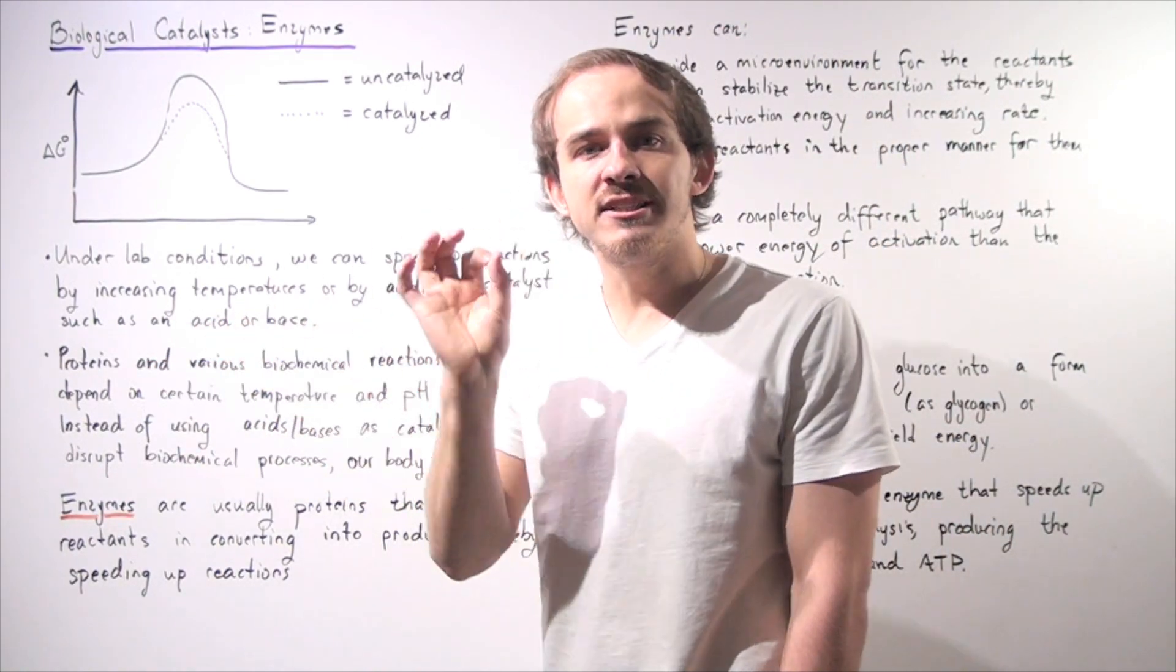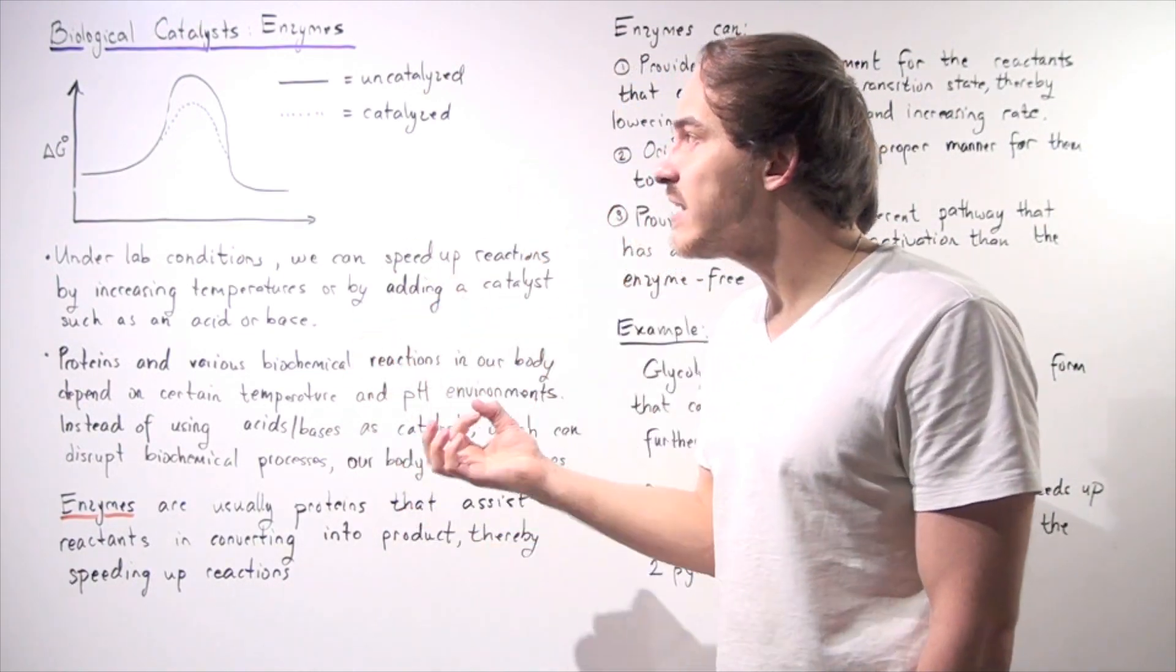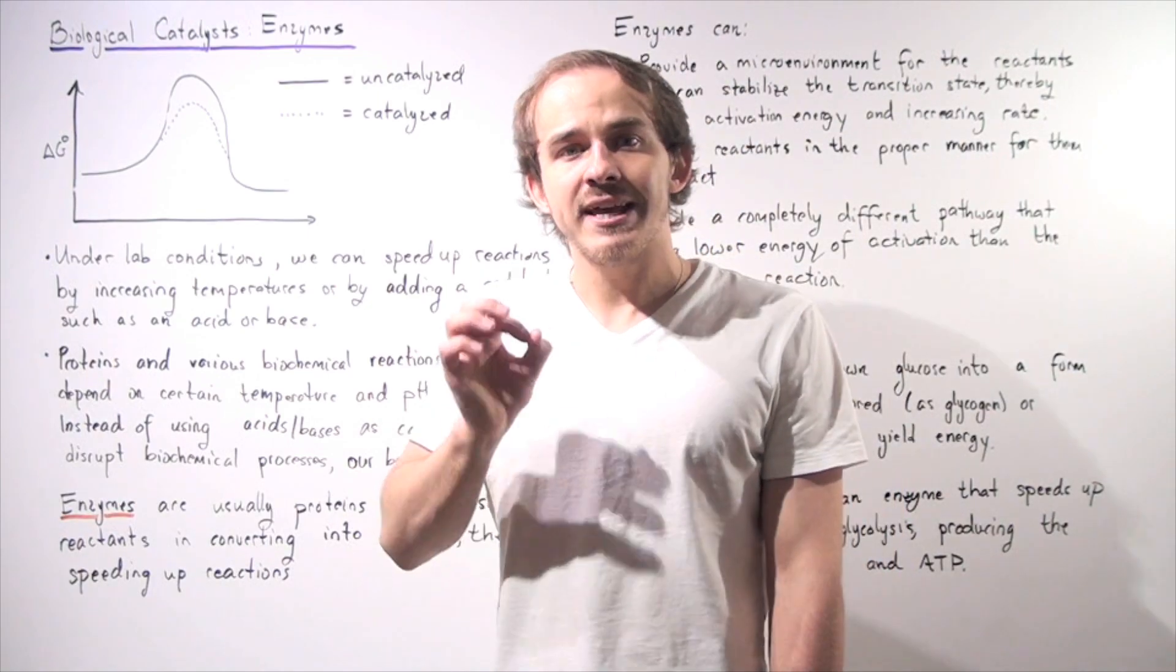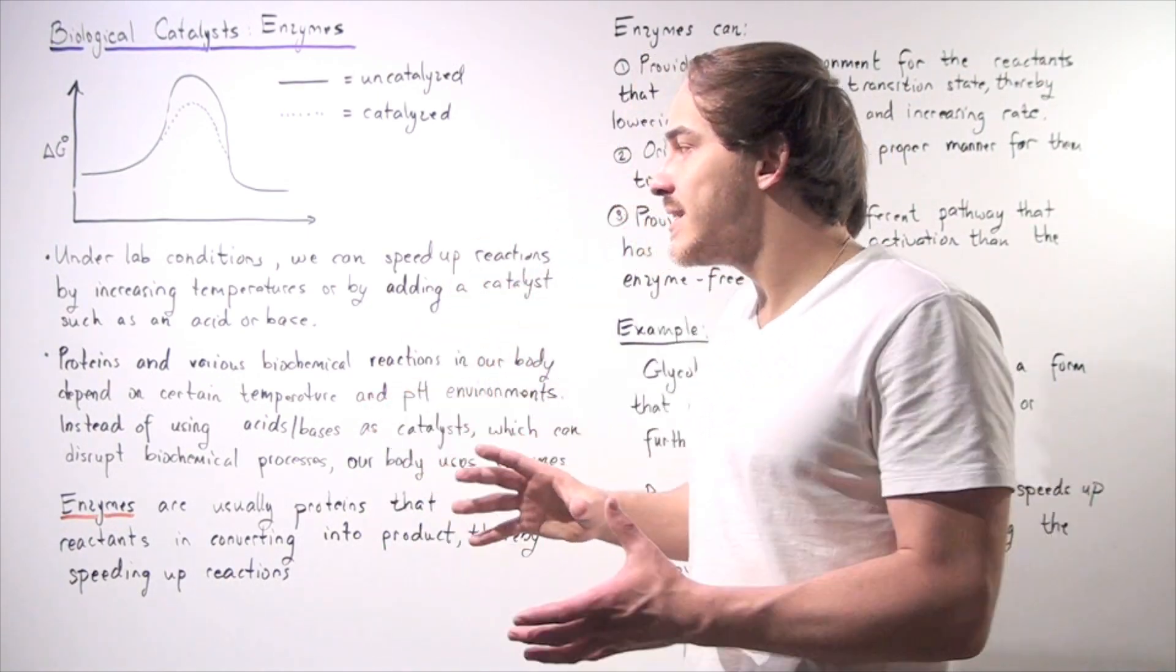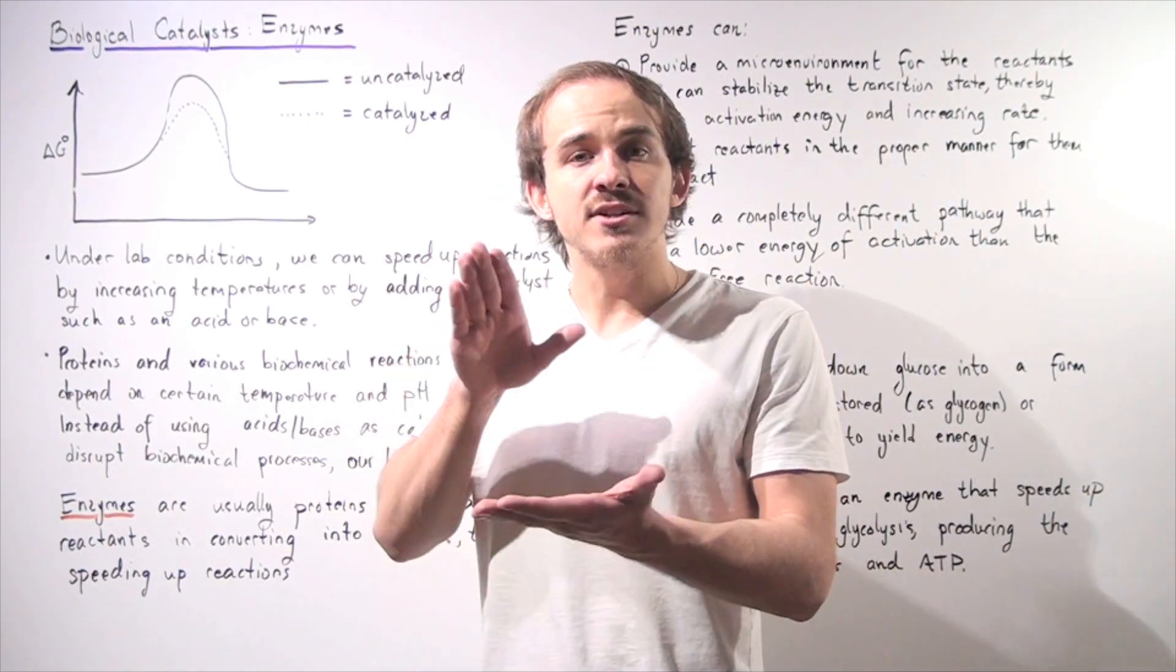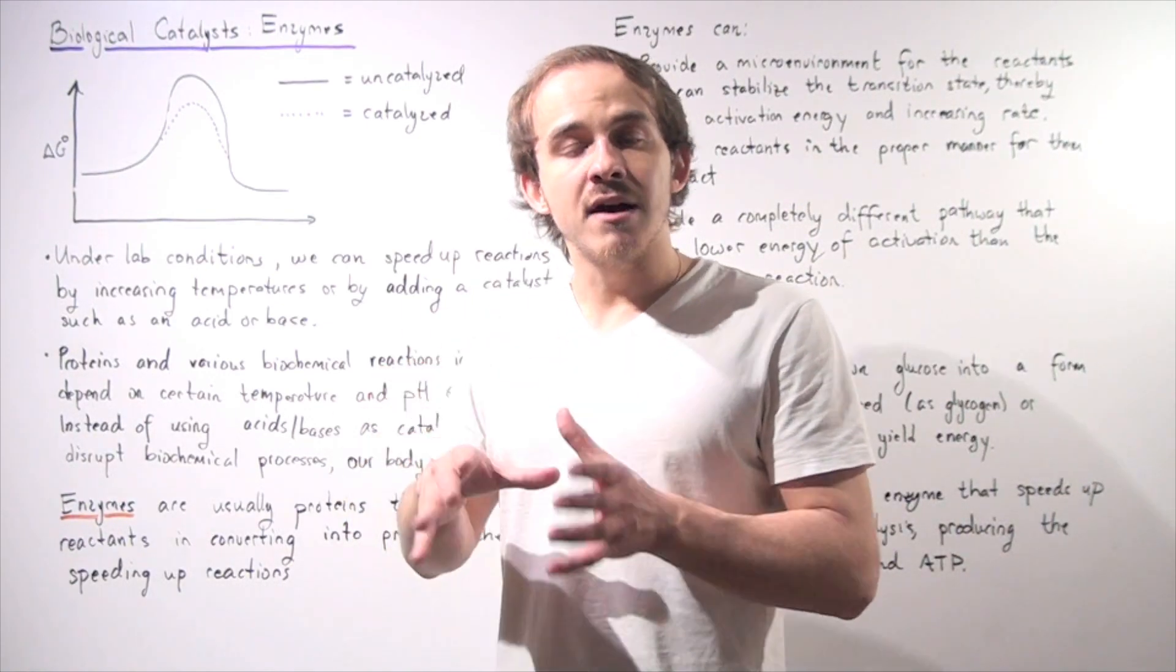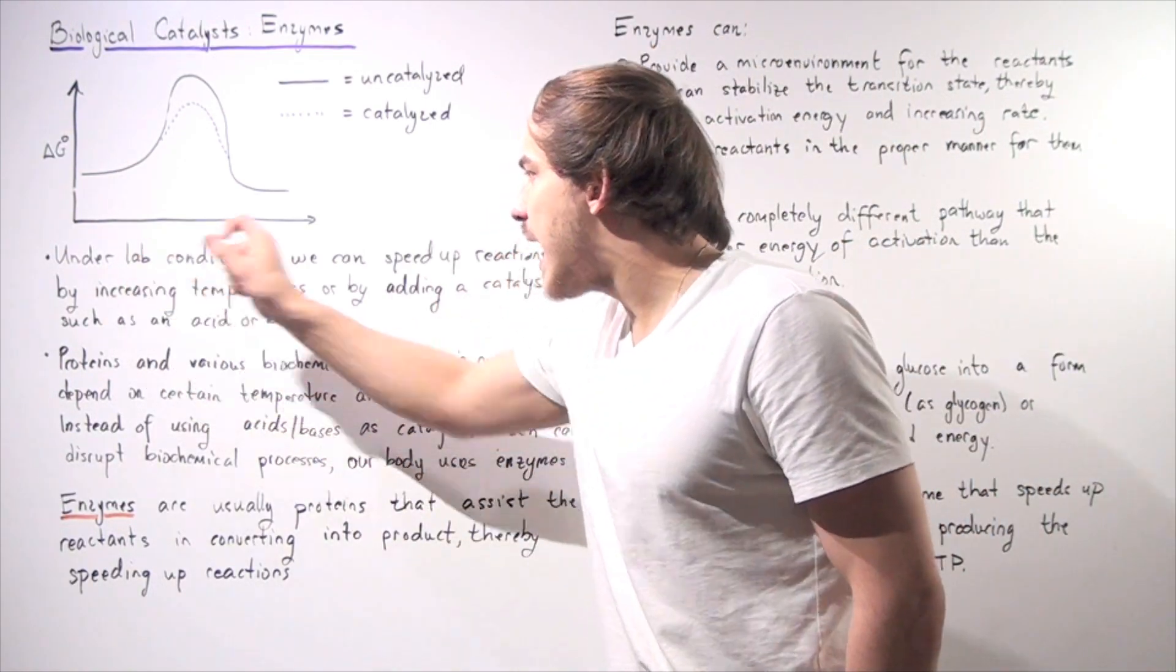Now our body works in a slightly different way. Our body also utilizes these catalysts, which help decrease the rate of reactions, but they cannot simply increase the temperature. Our body cannot simply increase temperature or add an acid or a base, because our biochemical reactions taking place inside our body depend on certain temperatures and certain pH environments. So our environments inside our body need to be of a stable and constant environment.